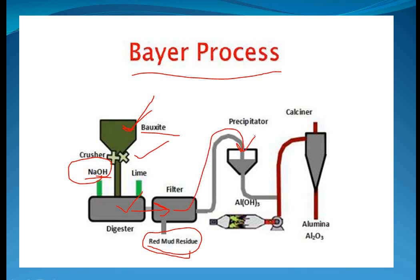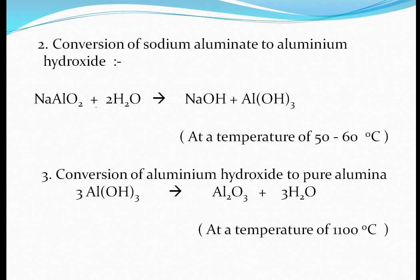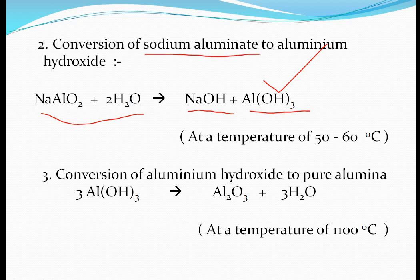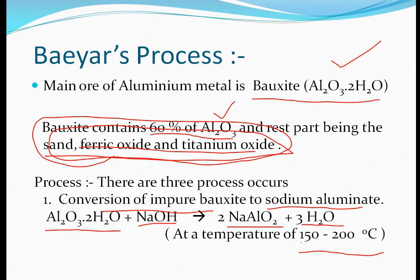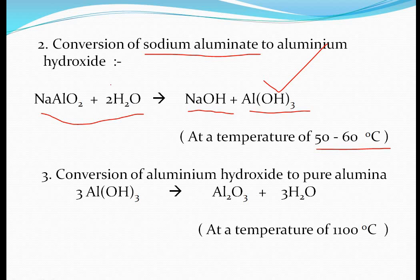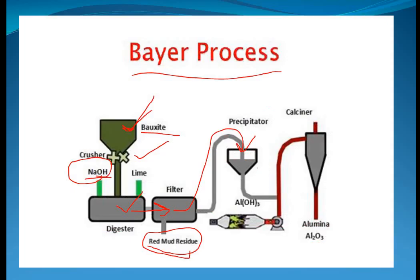The filtrate then goes to the precipitator, where it is cooled with water at a temperature of 50 to 60 degrees Celsius. Previously the temperature was 150 to 200 degrees Celsius; now we cool it down by adding water. This converts the sodium aluminate into sodium hydroxide and aluminium hydroxide — Al(OH)₃ — which is what we require.